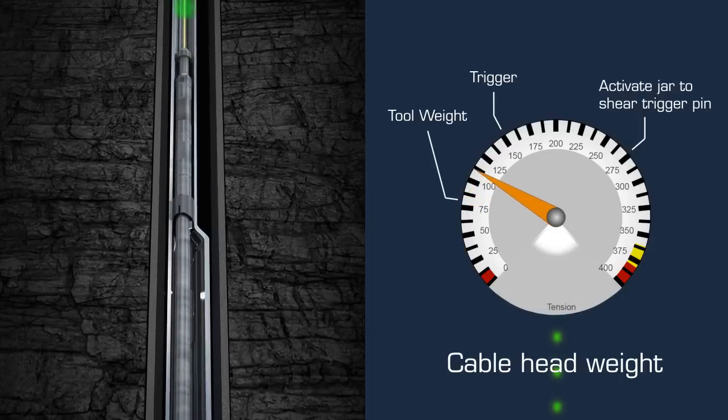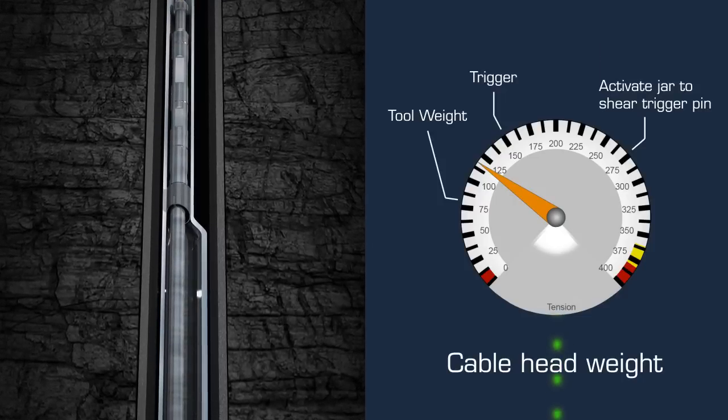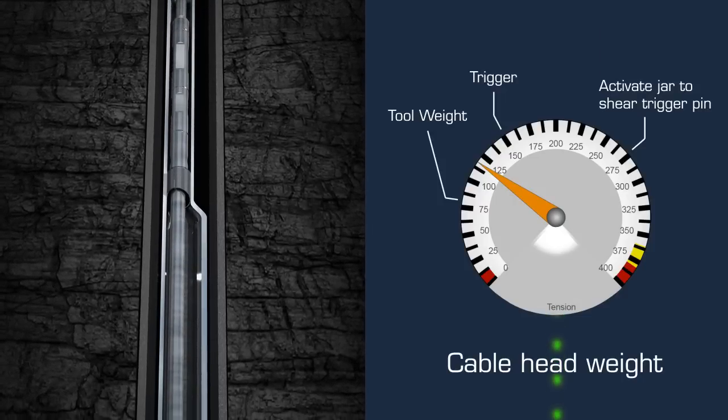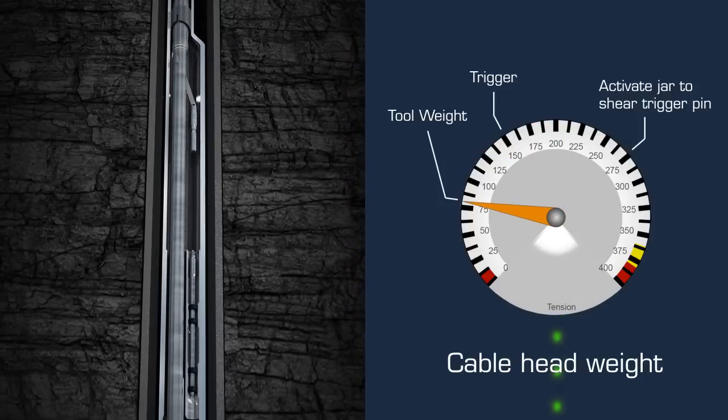The tension is monitored as the kickover tool is pulled up and enters the orientation slot. The trigger is activated. Precise monitoring ensures that the shear pin in the trigger is not snapped.